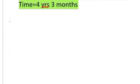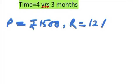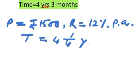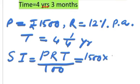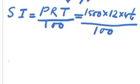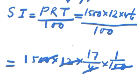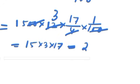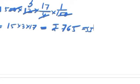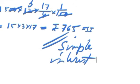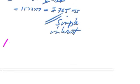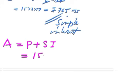Now it's quite easy — just putting the values into the formula: SI = PRT/100, where P = 1500, R = 12, and T = 4¼. After cancelling out numbers and simplifying, the answer is rupees 765, which is our simple interest. Next, Amount A = P + SI = 1500 + 765 = rupees 2265.